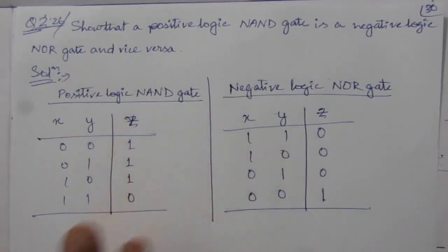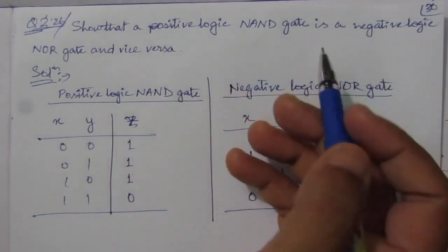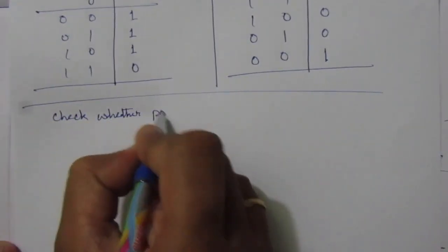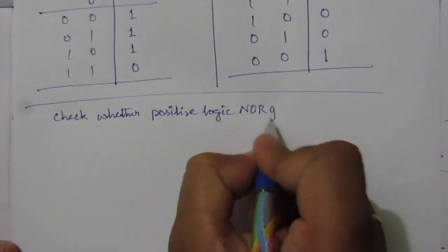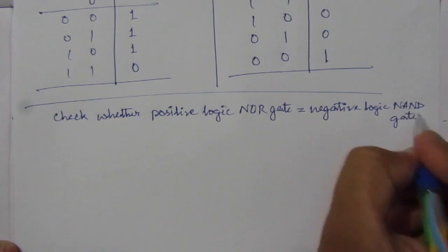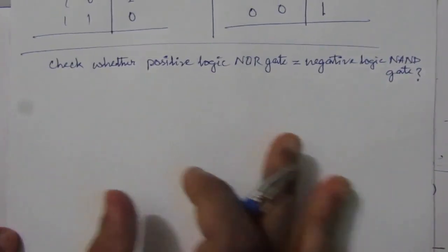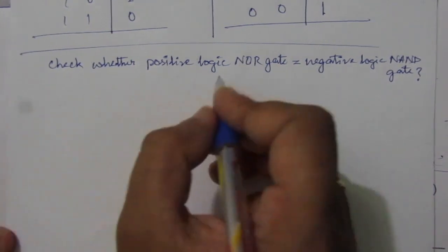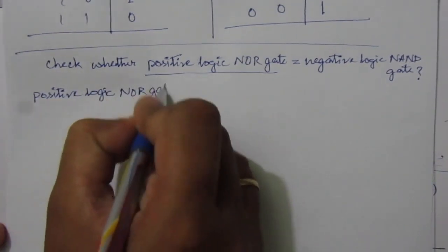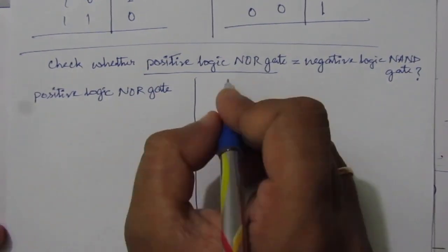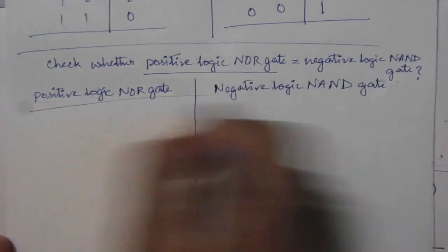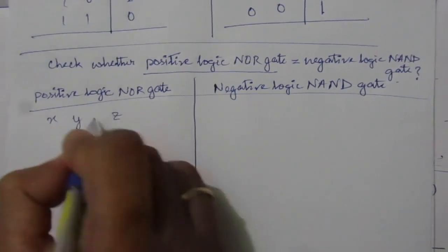Now let us find out whether a positive logic NOR gate is a negative logic NAND gate or not. The second part of the problem is: check whether a positive logic NOR gate is equal to a negative logic NAND gate. So we have to check this one; similarly, we will make the truth table. On the left hand side, we will find out the positive logic NOR gate, and on the right hand side, we will find out the negative logic NAND gate. We have two inputs x and y and one output z.